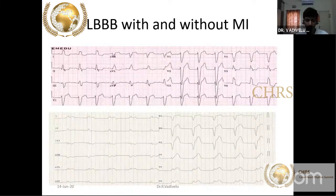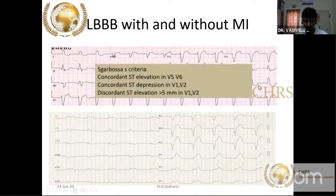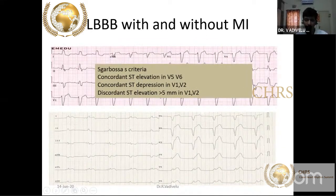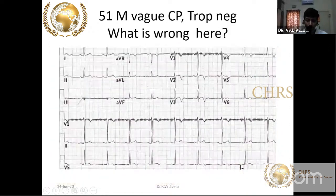The upper ECG strip shows non-ischemic LBBB where V5 and V6 show inverted T waves and ST segment depression. Whereas in the bottom strip, there is concordant ST segment elevation with upright T waves — very classical of ischemic LBBB.